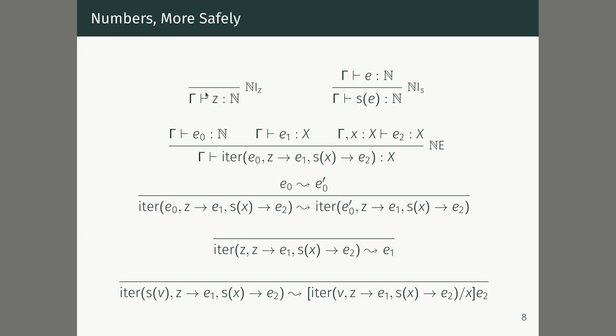Gödel added a type of natural numbers to the simply typed lambda calculus. Every natural number is introduced by either zero (written z), or by taking the successor of a natural number expression e. Starting with zero and adding successor as many times as we want, we can count: 0, 1, 2, 3, 4, 5, 6, 7, 8, 9, 10, as high as you like.